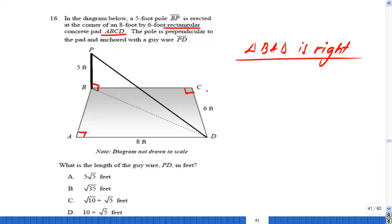It may not look right in this 3D drawing, but you can redraw it. That triangle looks something like that. Triangle BAD has a right angle. BD is my diagonal.